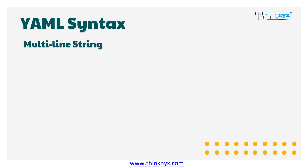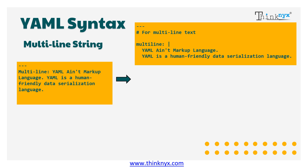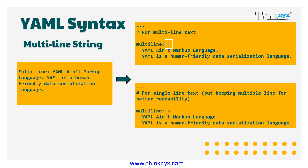Let's now talk about multi-line strings. What if we want to print two sentences in two separate lines? We could do so by adding a pipe symbol. The sample without it is not so readable. What if we want to print a single-line string but for readability you want to place it in multiple lines? We could do so by adding a greater-than symbol.